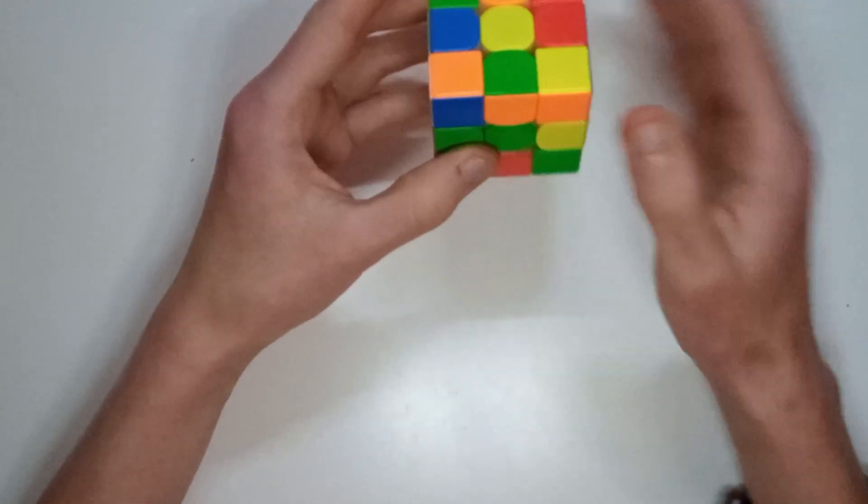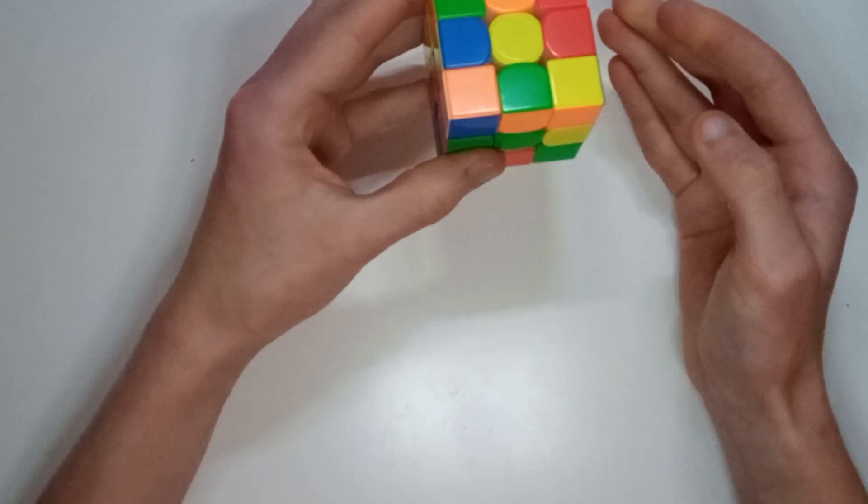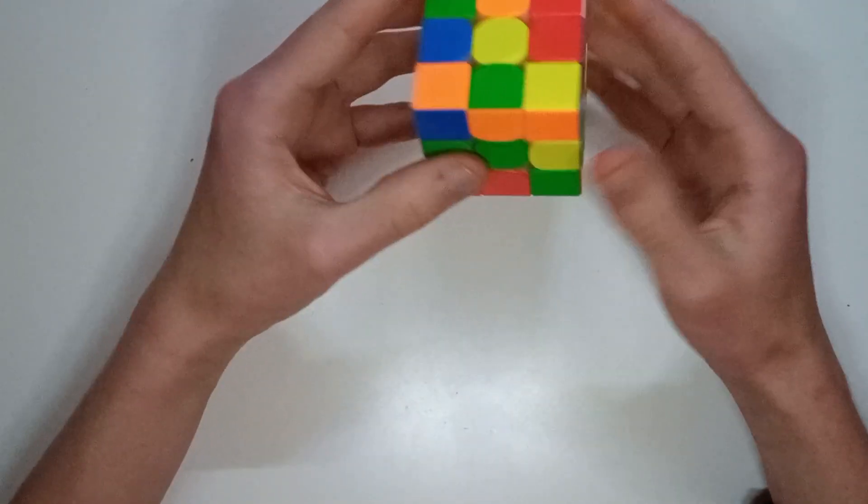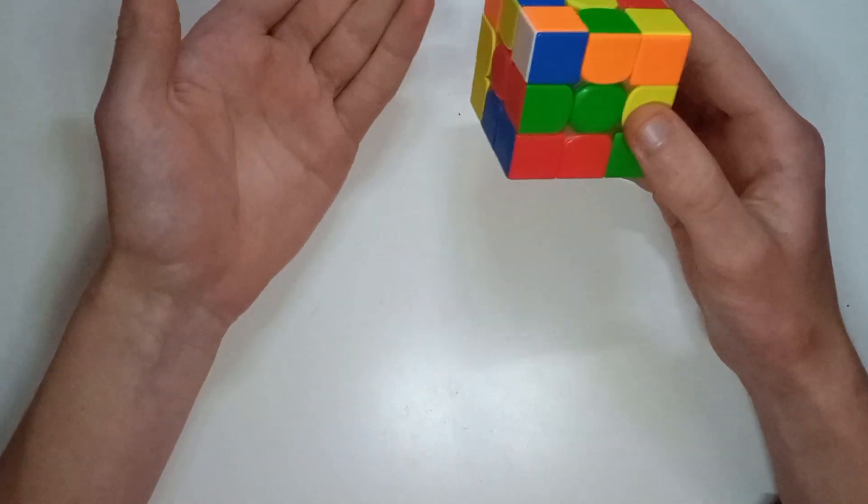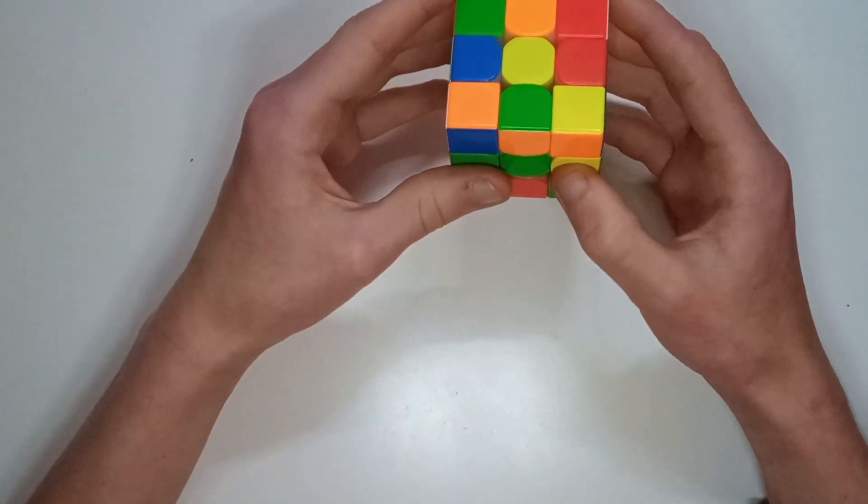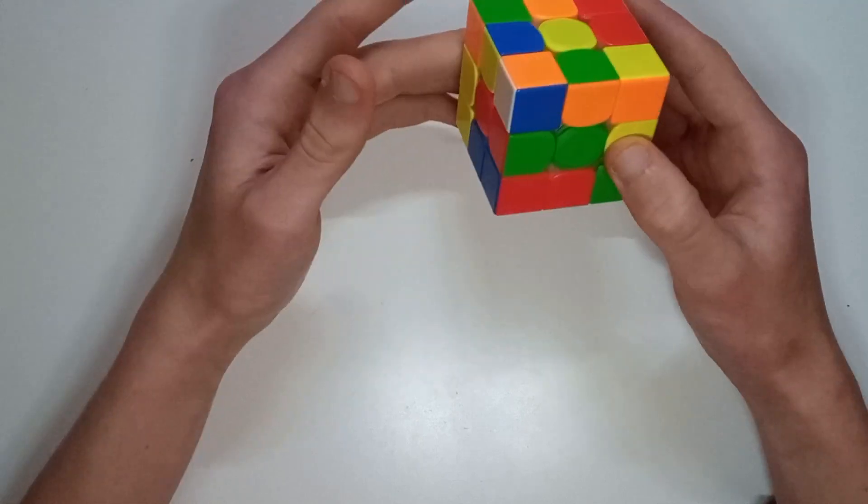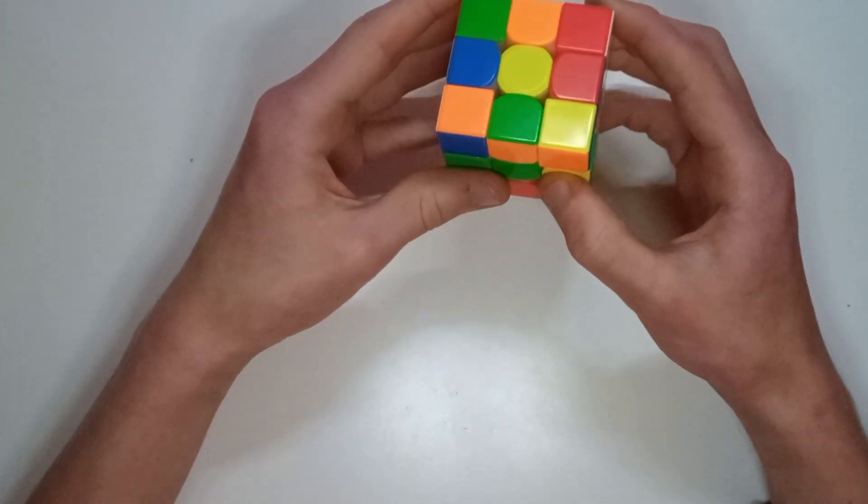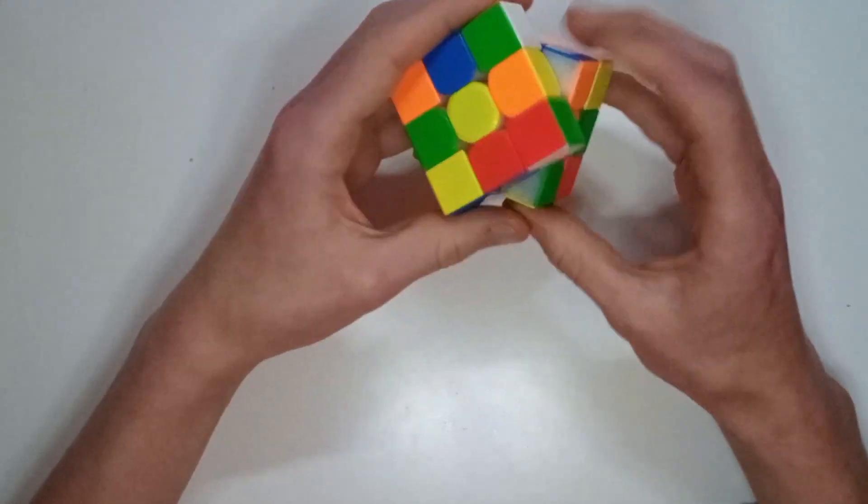And then green in there, then this pair in here, and I have a suspicion he knew exactly what was going on up to this point completely. He's essentially going to do an XXX cross because he's not actually going to align the cross correctly until he's inserted three F2L pairs or got them prepared.